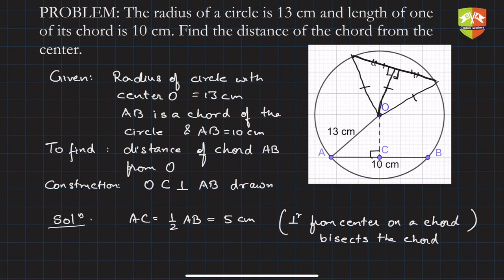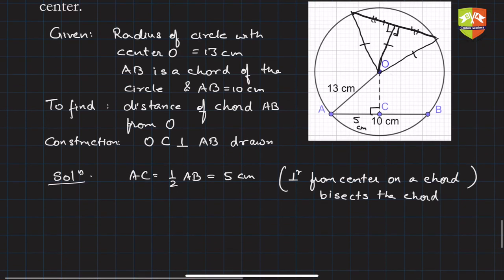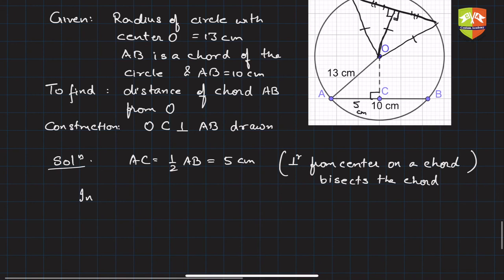Now in triangle OAC, I have to find OC. By Pythagoras theorem, OA² equals OC² plus AC².